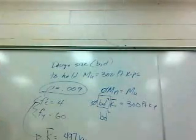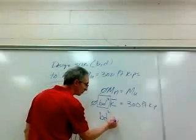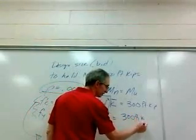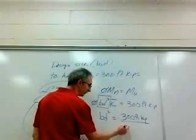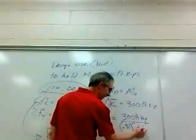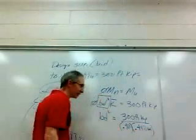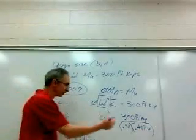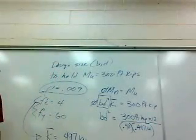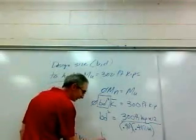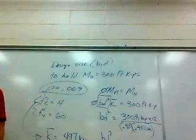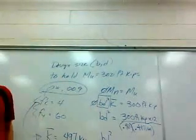So this becomes 300 foot-kips divided by phi, which is 0.9, times k-bar, which is 0.4971 ksi. Are you going to tell me anything here? 0.497. Do you have to change your terms to be in inches? Units. So be in inches. When you do that, the BD² that you're going to need is 8,047.